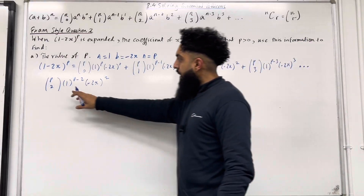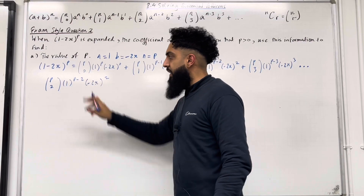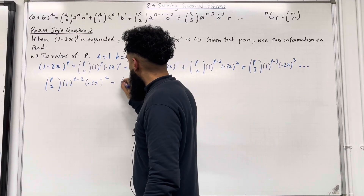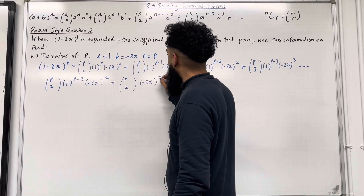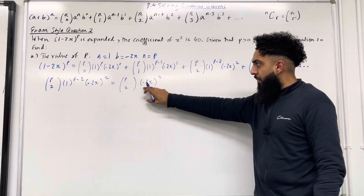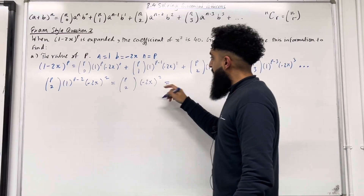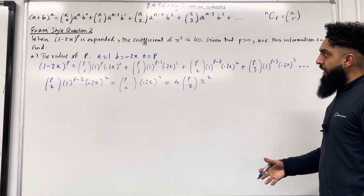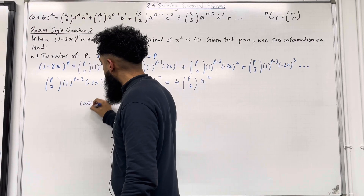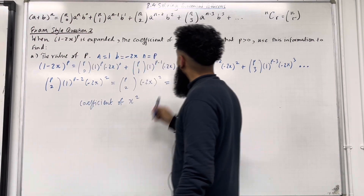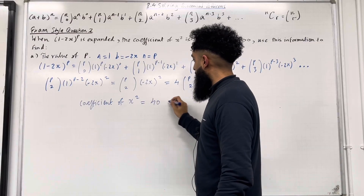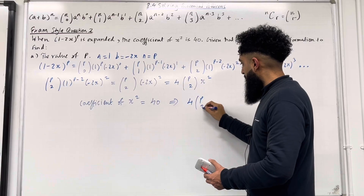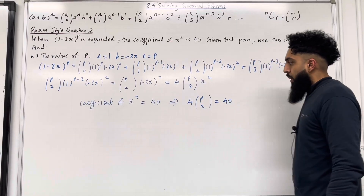Since 1 to any power is always 1, we have 1^(p−2) = 1. So this simplifies to pC2 · (−2x)², which is pC2 · 4x², or 4 · pC2 · x². In the question, the coefficient of x² equals 40, so 4 · pC2 = 40.